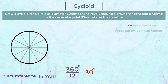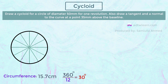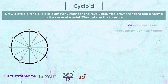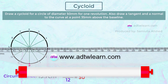Since we divided the circle into 12 parts, we will now mark the points on the circumference of the circle: first point, second point, third, fourth, fifth, sixth, seventh, eighth, ninth, tenth, eleventh, and twelfth point. Mark the initial point as P. Now extend a horizontal line from this P point using a roller scale.